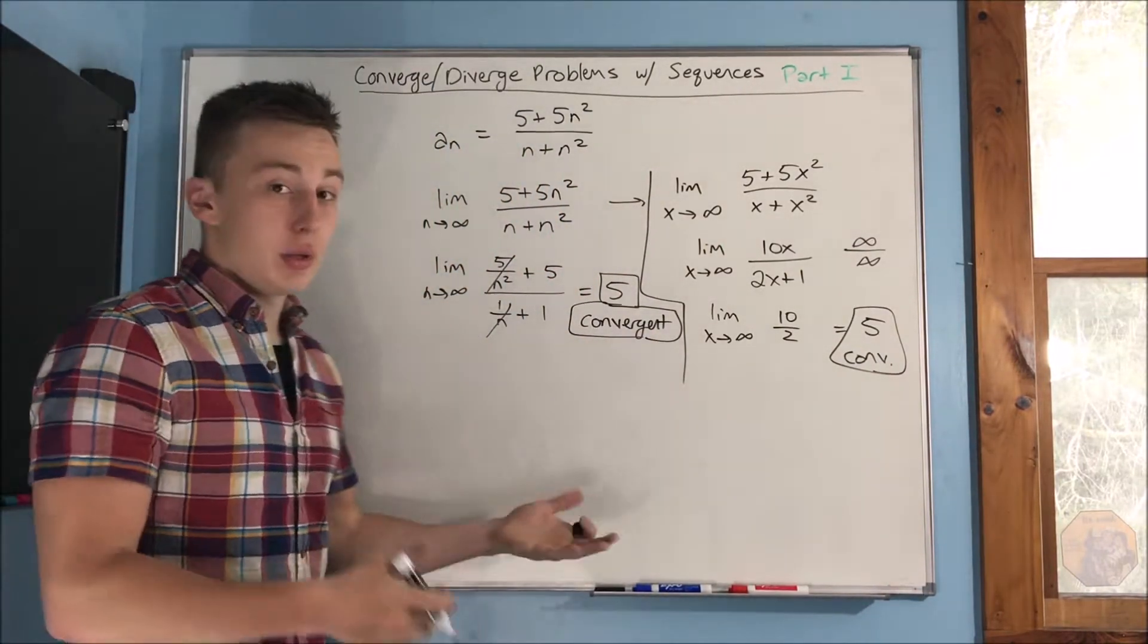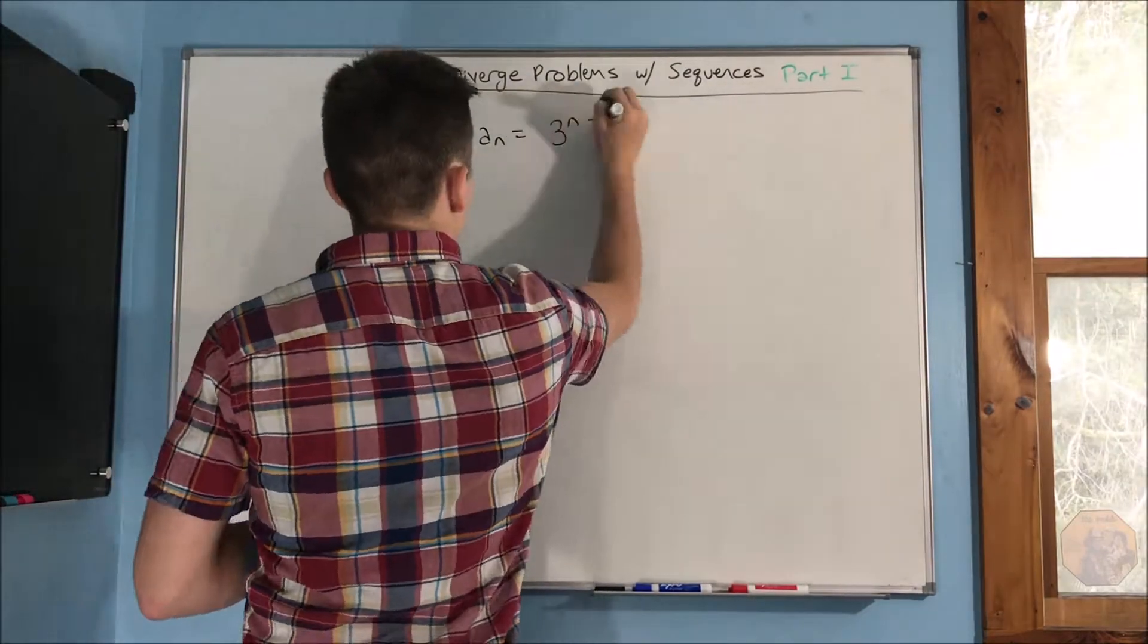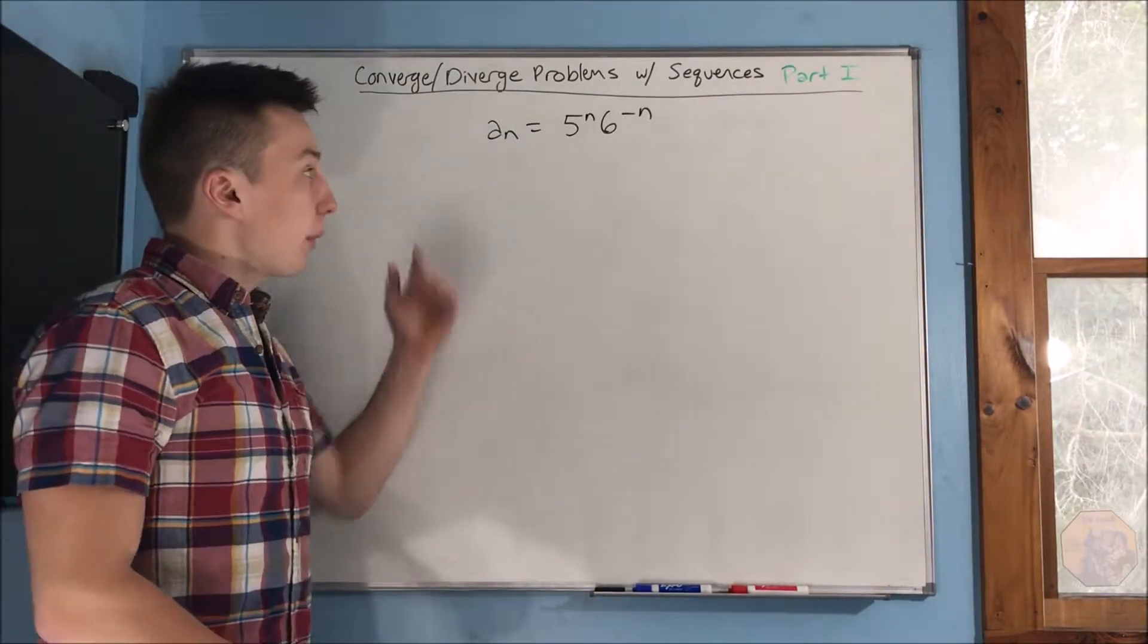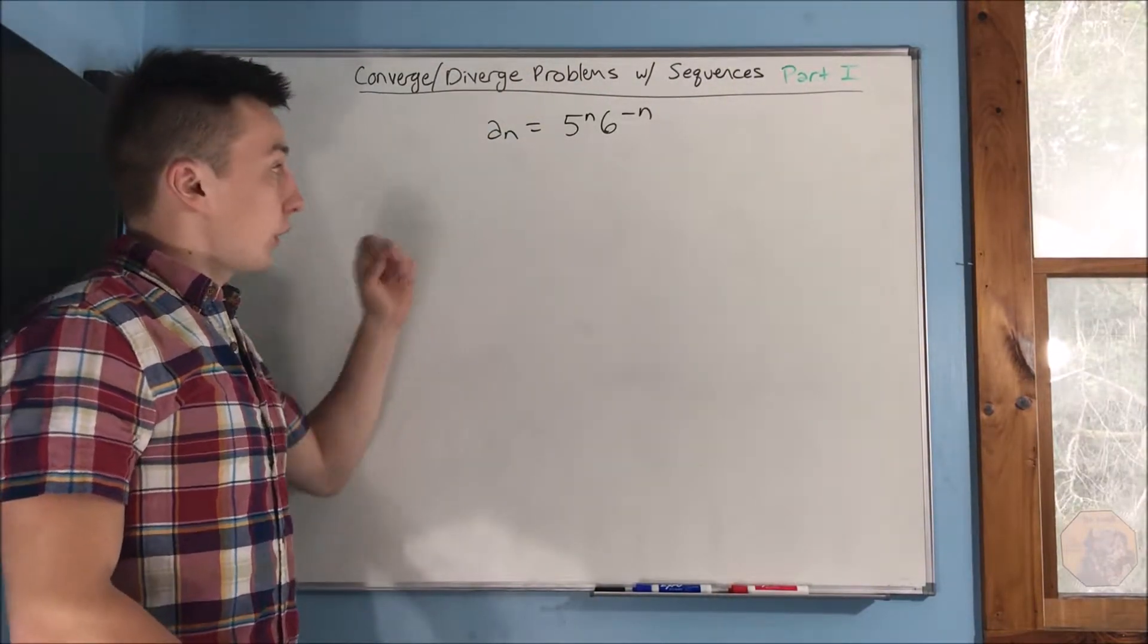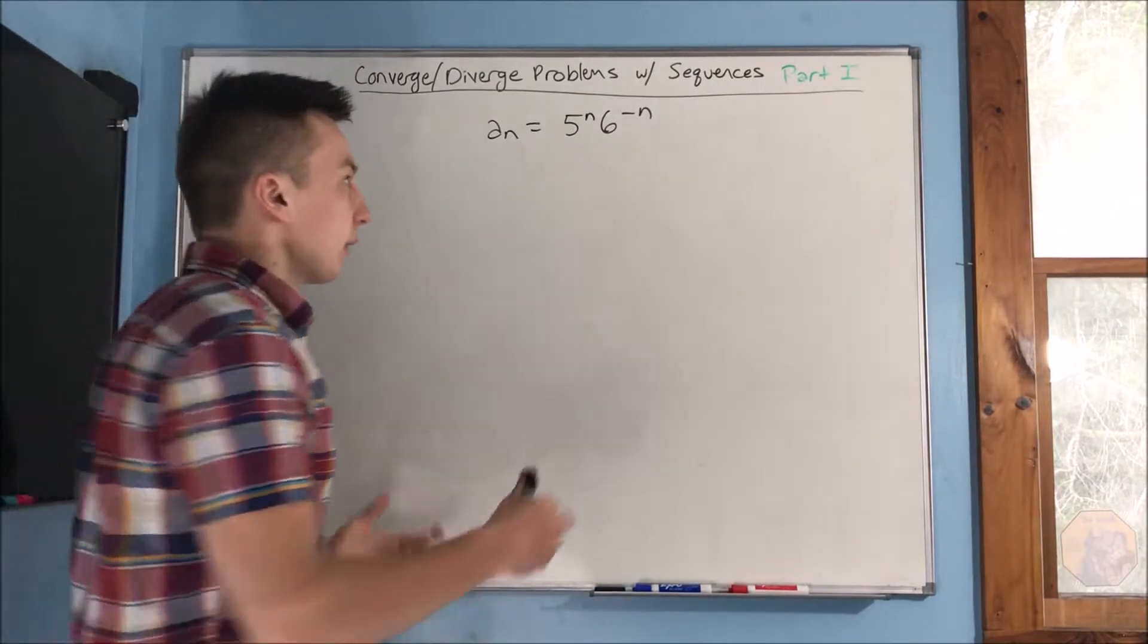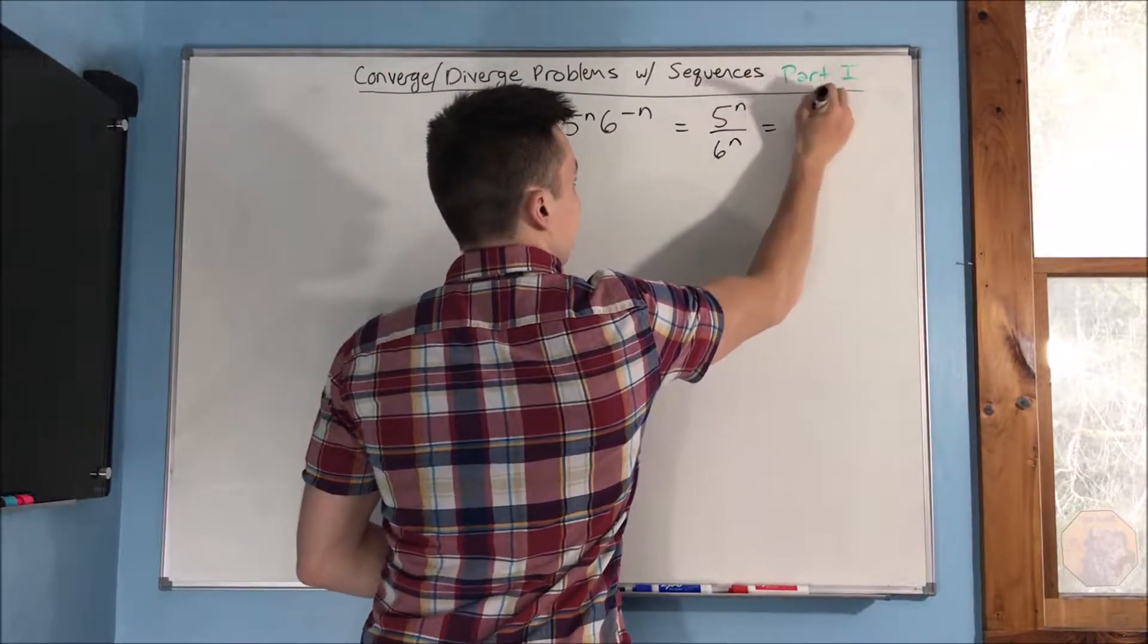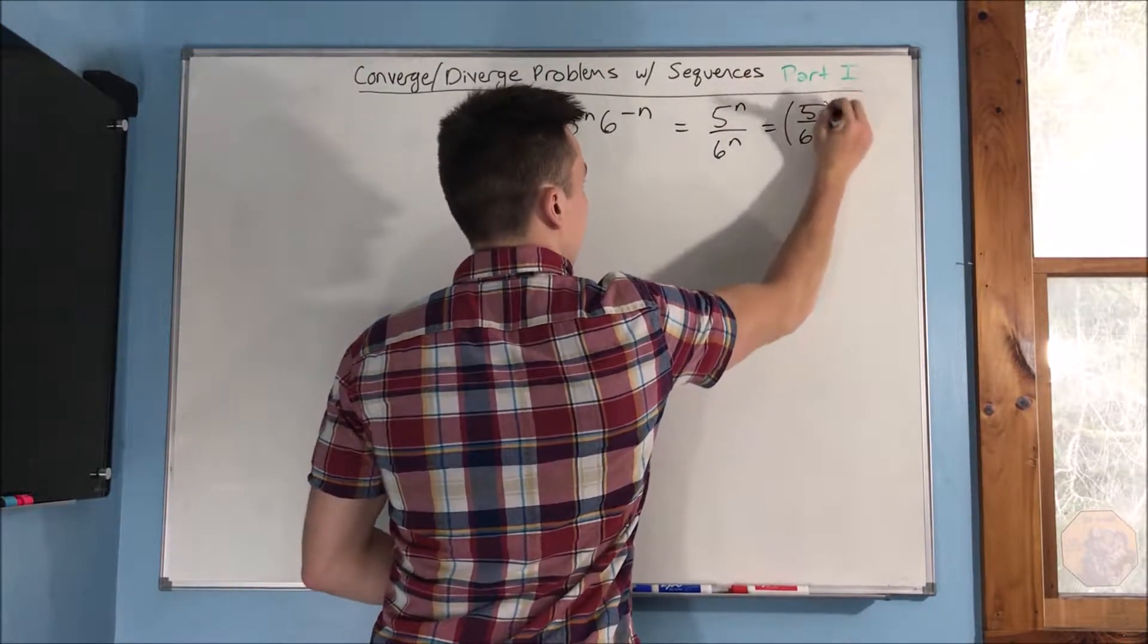So you can do it either way, it's just how do you actually want to get there? So we have our next problem up on the board here, a sub n equals 5 to the n times 6 to the negative n. Now we can easily rewrite this as 5 to the n over 6 to the n, which also is 5 over 6 to the n.